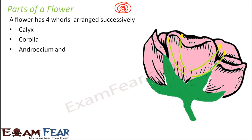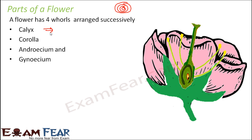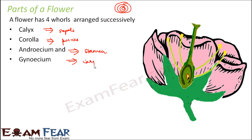The third whorl is Androecium, which consists of the stamens. All the stamens together — the whorl of stamens — is given the name Androecium. And the innermost whorl is the carpel, that is the Gynoecium. So when I talk about Androecium, I am talking about the stamens, and when I talk about Gynoecium, I am talking about the carpel.